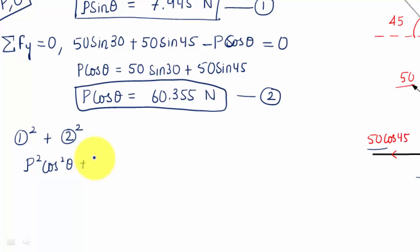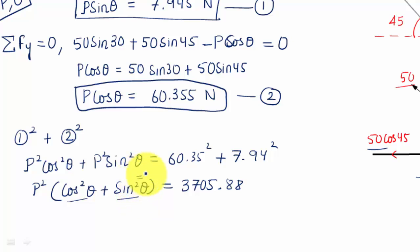This is P squared cos squared theta plus P squared sine squared theta, and on the right hand side we have 60.35 squared plus 7.94 squared. You take P squared as common, and this becomes a trigonometric identity - cos squared theta plus sine squared theta equals one. This should eventually work out as 3705.88, so P squared equals 3705.88, and the value of P is the square root of 3705.88, which works out as 60.87 Newtons or approximately 61 Newtons.